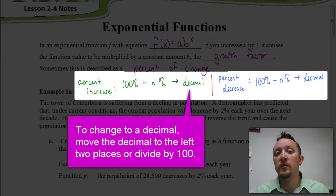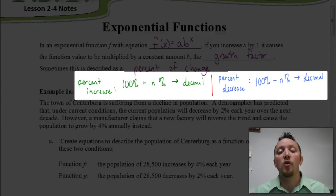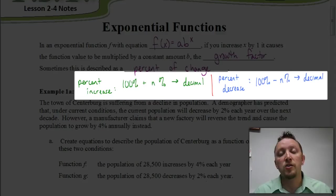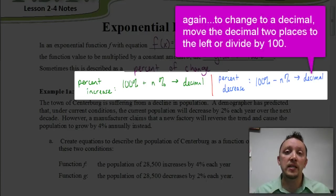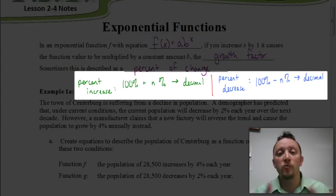In situations where our value is decreasing by a certain percentage, we take 100% of whatever the value was originally and subtract from that the percent we're losing. So if we had a population decreasing by 4%, we take 100% minus 4%, giving us 96%, and change that to a decimal of 0.96. It's important that you understand how to work with percents before we look at some of these story problems.